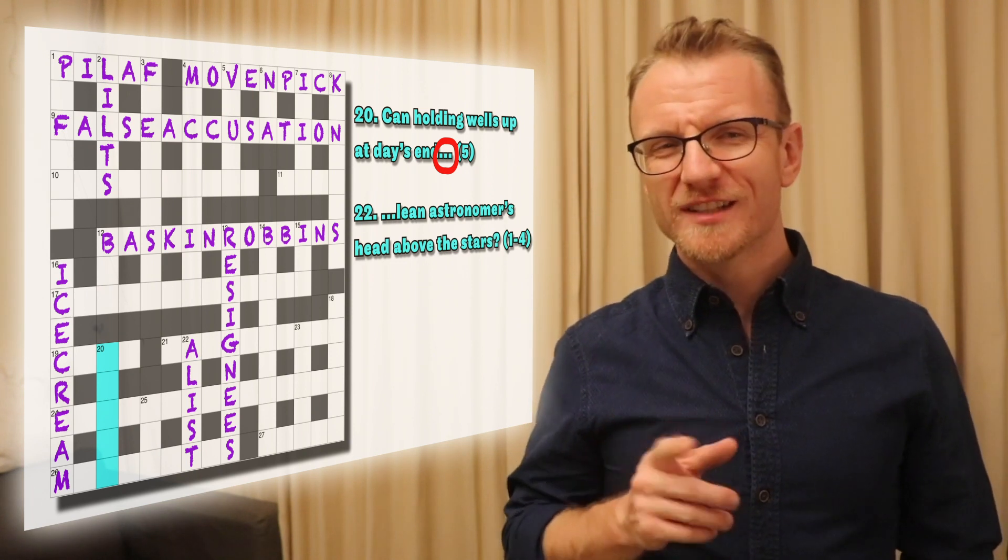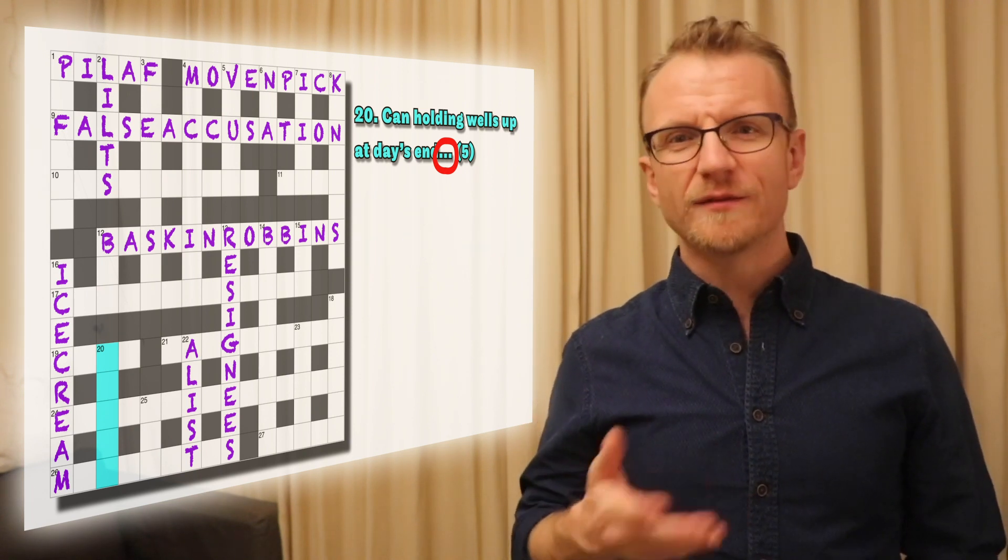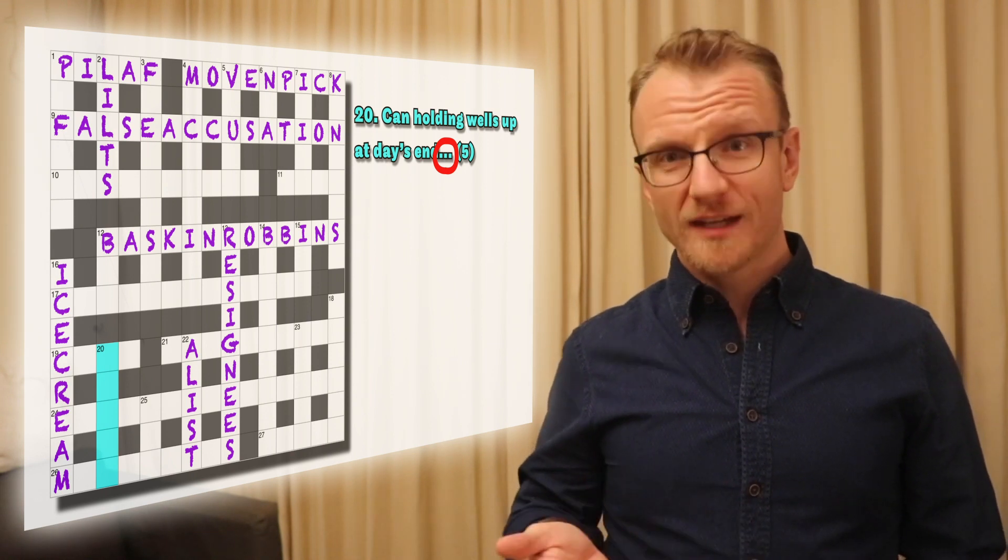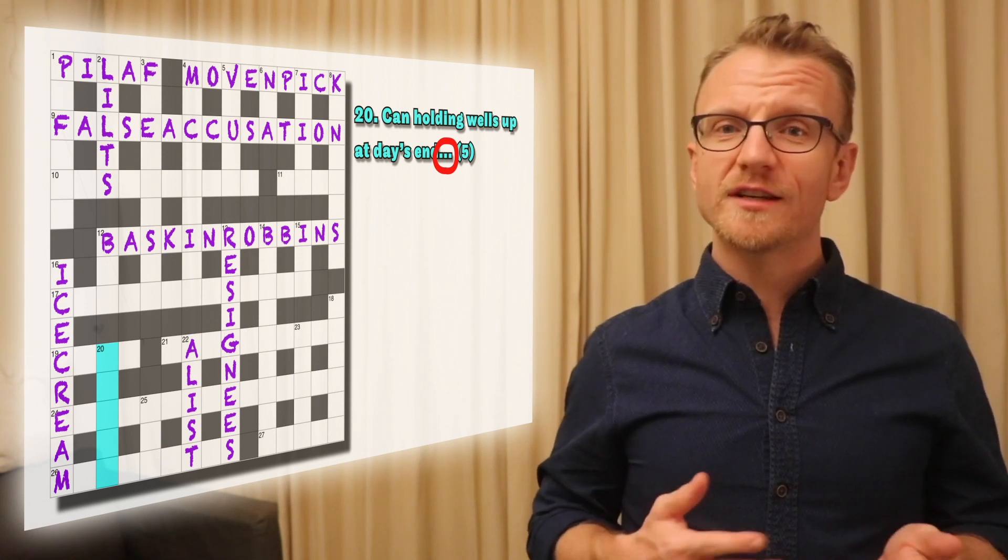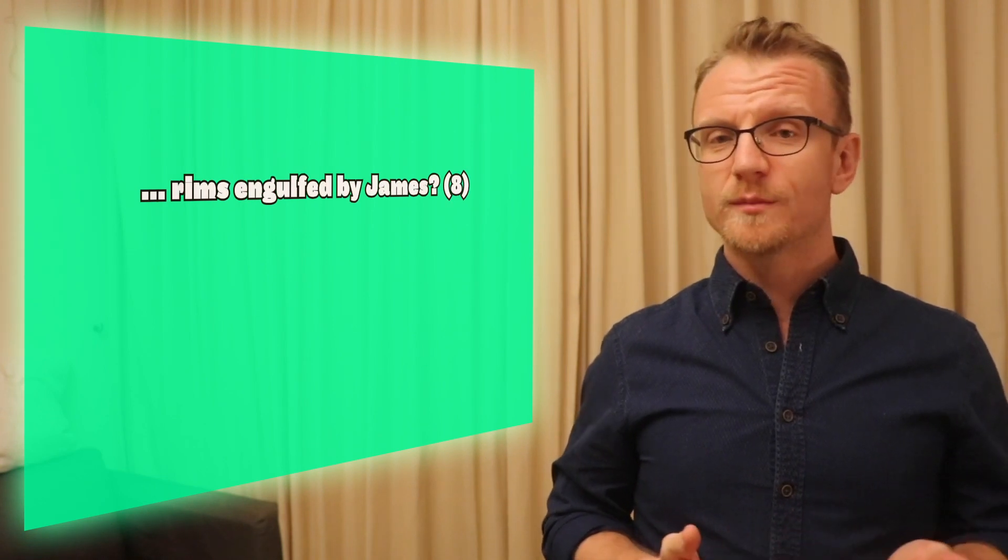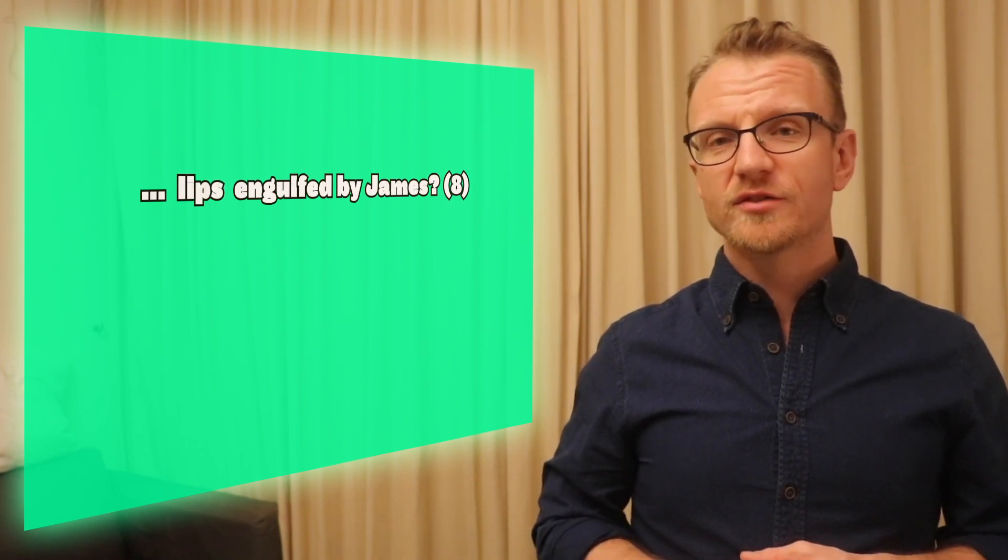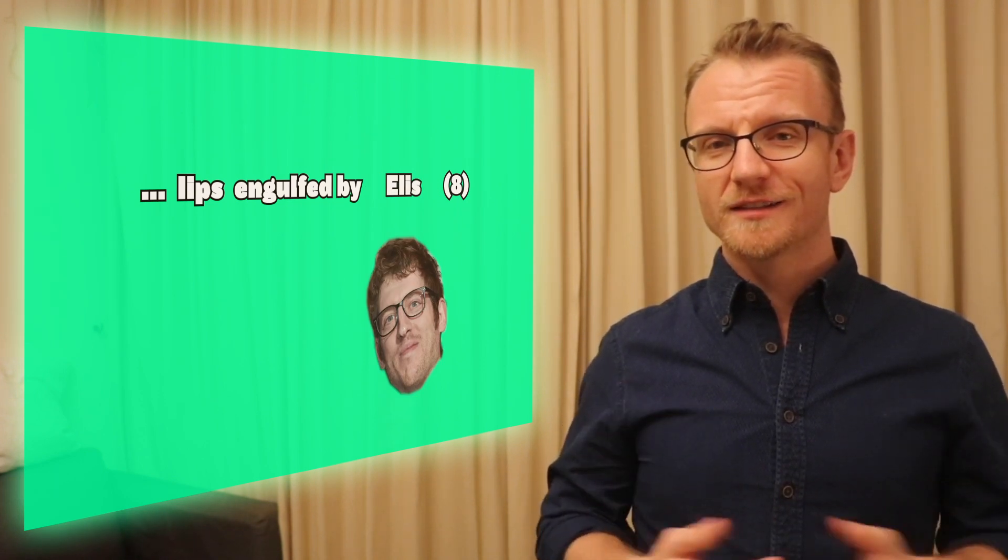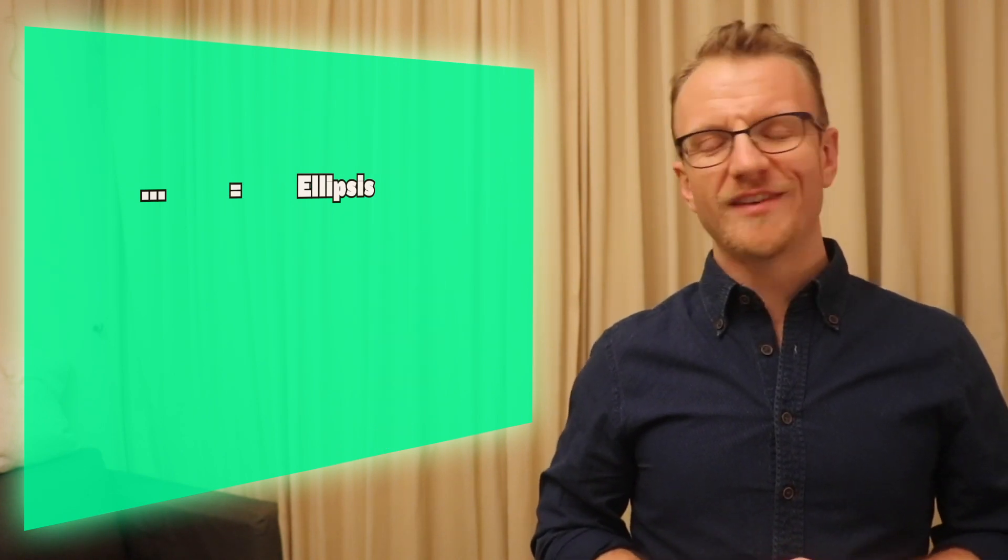Having said that, some setters might connect them and leave the definition for the subsequent clue in the previous one. It doesn't happen a lot. And a couple of times I've even seen the three dots being the definition itself. Take this example: rims engulfed by James. So rims can be lips, and shout out to Welsh comedian Ellis James. If you put lips inside Ellis, you get ellipsis, which makes the three dots the definition. That's very cheeky.